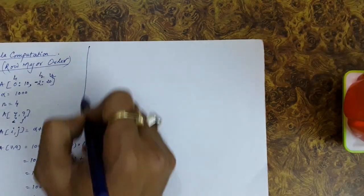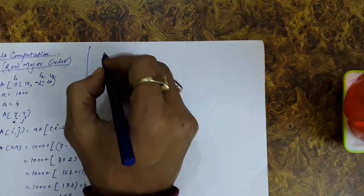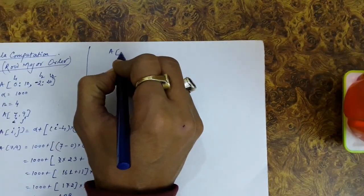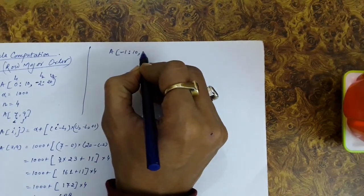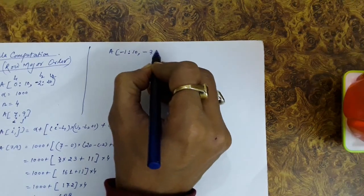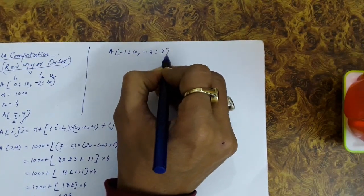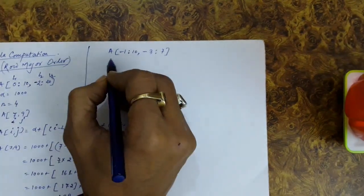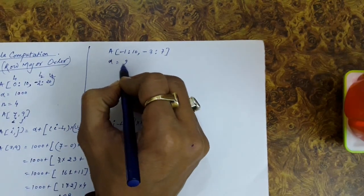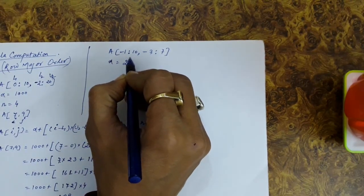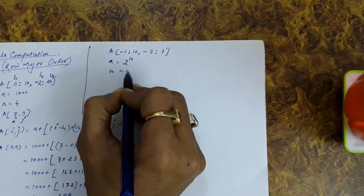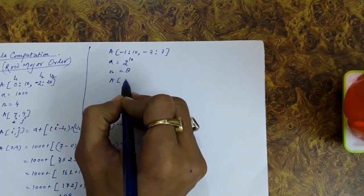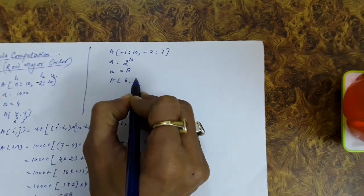So 1688 is the address. Let's take another quick example. The array is minus 1 to 10 for rows and minus 3 to 7 for columns. Alpha, the address of the first element, is 2 raised to the power 10. Every element requires 8 bytes for storage and we need to find the address of a[6][3].